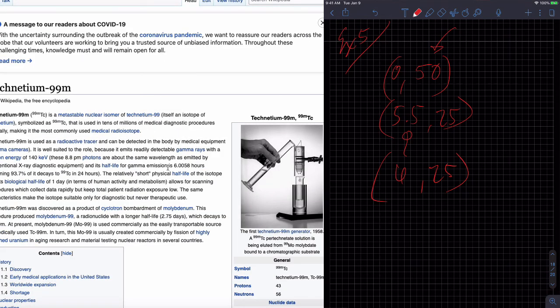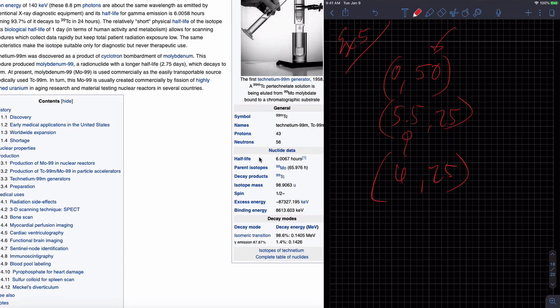Technetium 99M, blah, blah, blah. Let's go here and just go half-life. 6.067 hours. So I was closer with the 6 than I was with the 5.5. Now let's go back to part B.